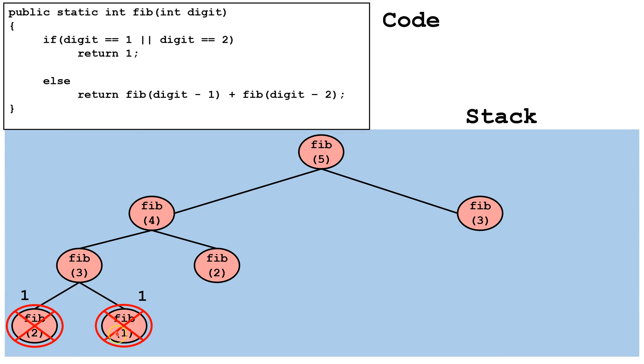So now we can add up these two values and figure out what is Fib 3 going to return. And Fib 3 will return 1 plus 1, which is 2.